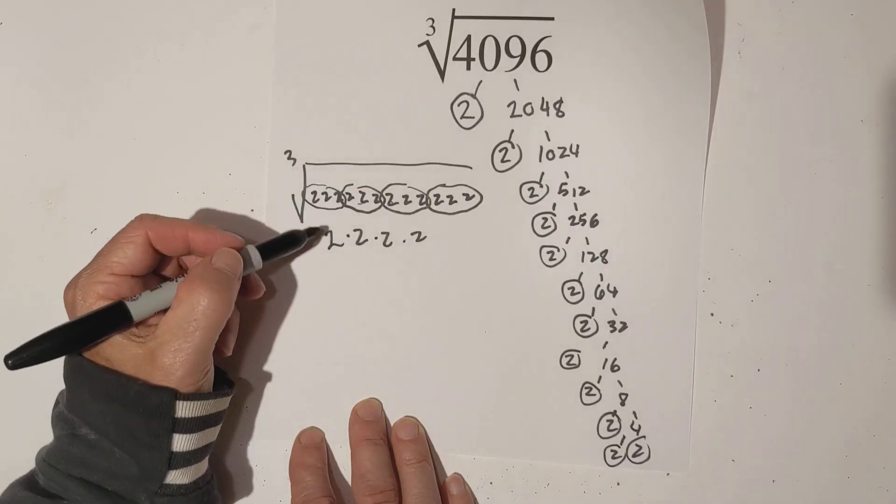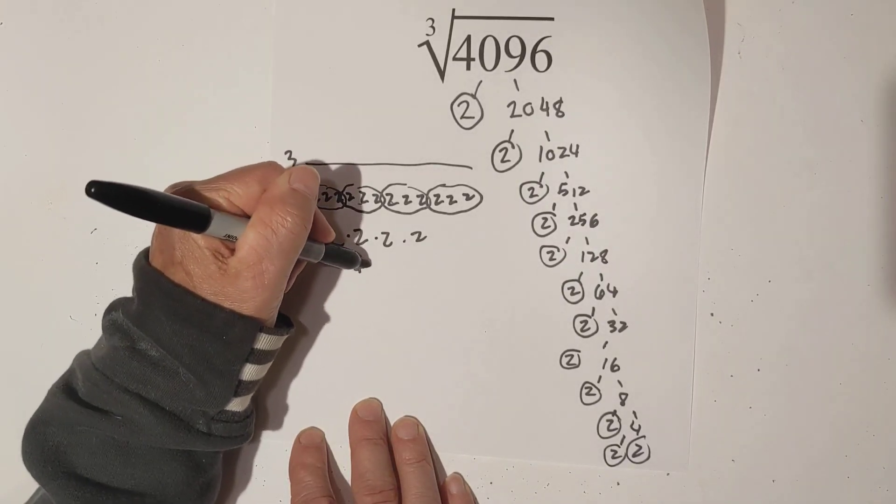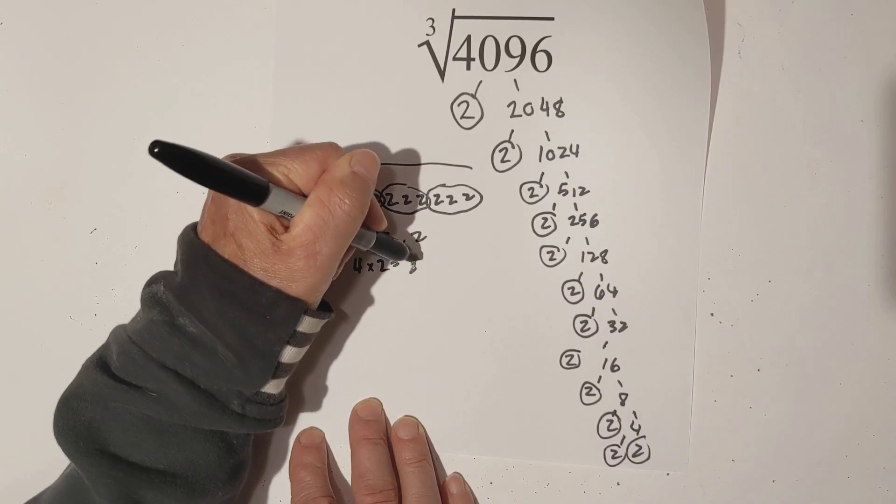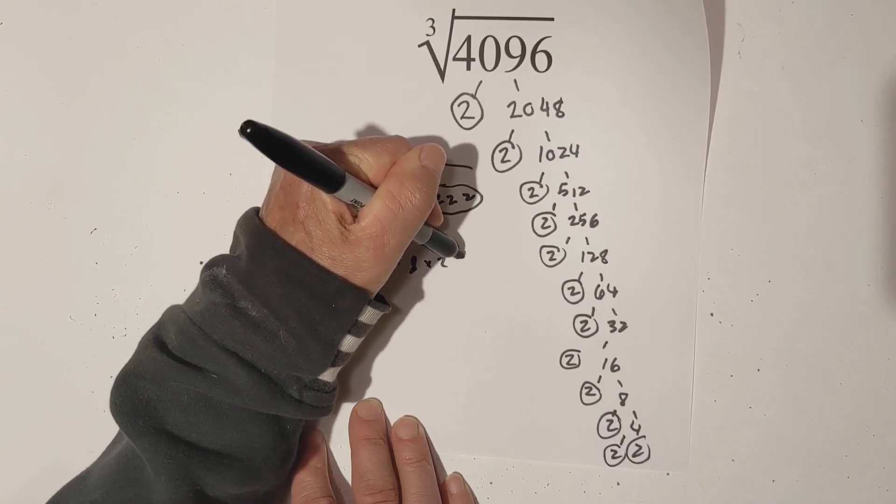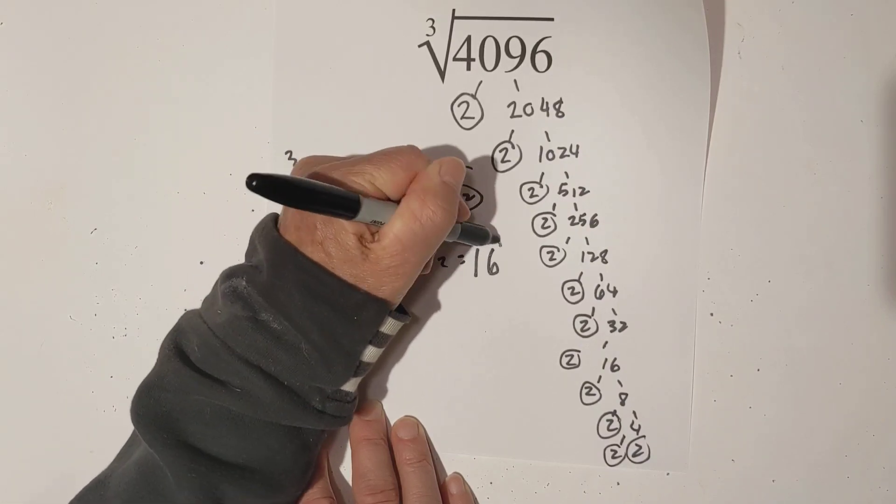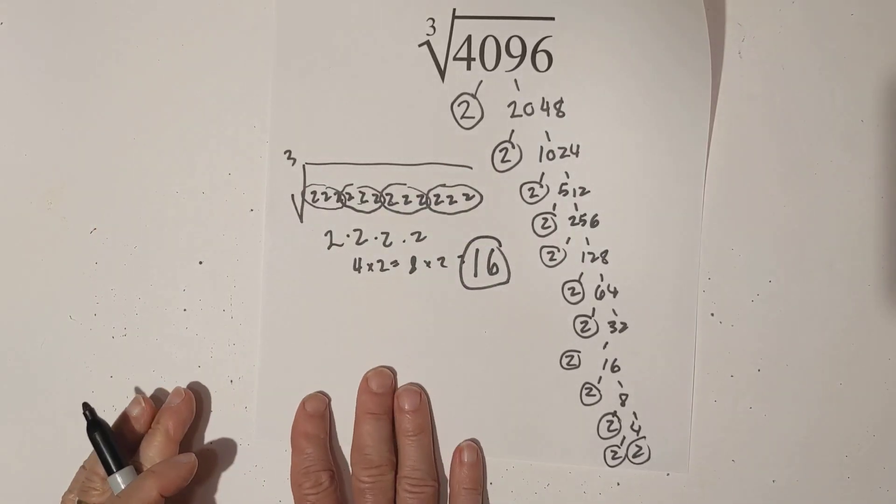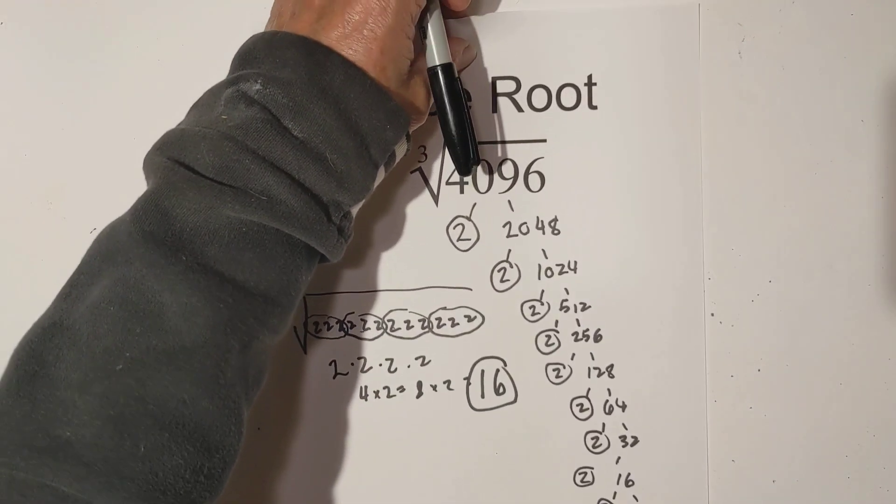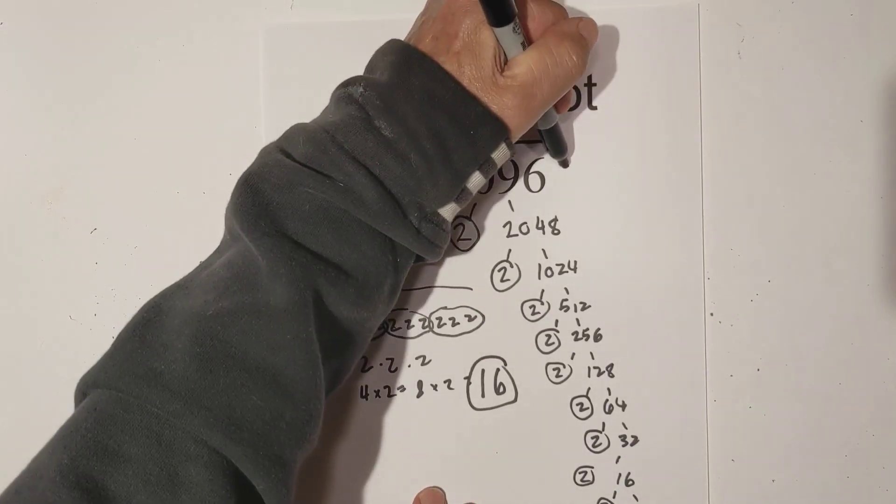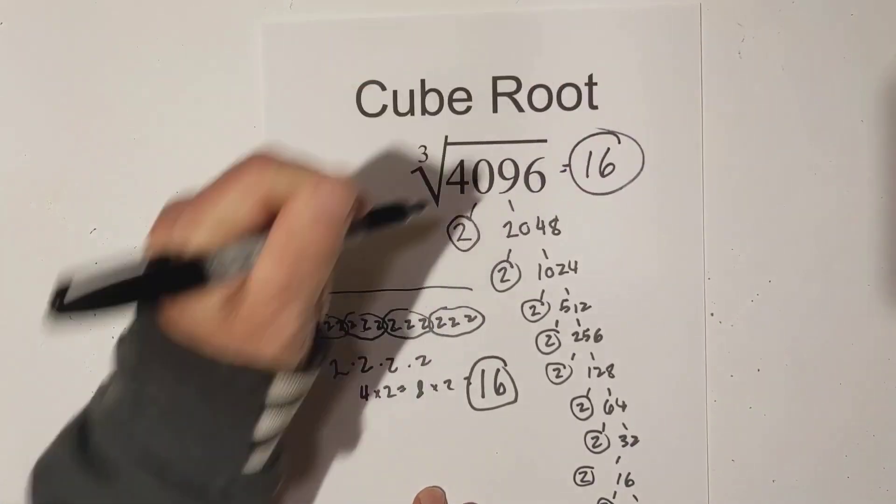So then you just multiply these together. 2 times 2 is 4, times 2 is 8, times 2 equals 16. So the cube root of 4096 equals 16.